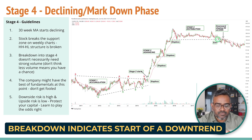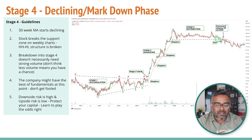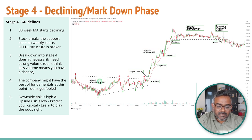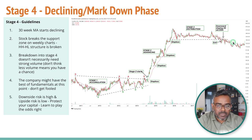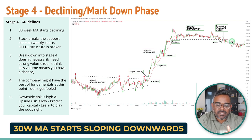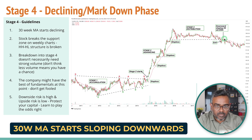This Stage 4 downtrend needs to be accompanied with a downward sloping 30-week moving average. In Stage 2 you see an upward sloping moving average, and in Stage 4 you see a downward sloping moving average. That's the first important rule: the 30-week moving average needs to be sloping downward.